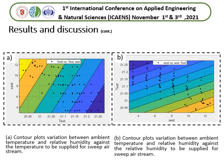These are the contour plots for the sweep stream, which show the non-linear relationship between the extract humidity ratio, extract temperature, and the humidity ratio and temperature to be exhausted out to the atmosphere.